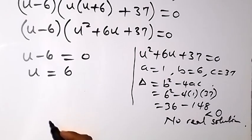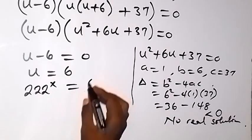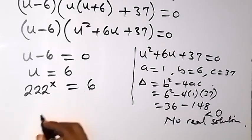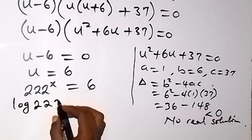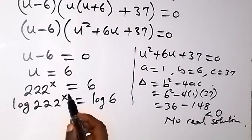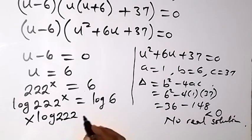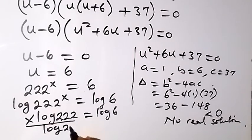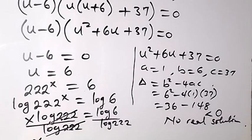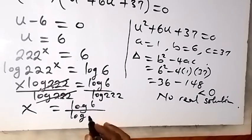We solve using u equals 6. Since u was defined as 222 raised to the power x, we have 222 raised to the power x equals 6. Taking the log on both sides: log(222^x) equals log 6. Bringing the power down: x times log 222 equals log 6. Dividing both sides by log 222, we get x equals log 6 divided by log 222.